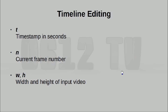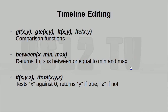The things you can use in a similar way include T, which is a timestamp in seconds; N, which is the actual frame number; as well as W and H, which are the width and height of the video. If you need to perform comparisons, you have access to functions like greater than, greater than or equal, less than, or less than or equal. These functions give you 1 if the comparison is true and 0 if not. Same deal for 'between' — if x is between the minimum and maximum value, you get 1, otherwise 0. If you want to do more complex comparisons, you can use 'if' and 'ifnot'. Basically a test is run against x. In the case of 'if', we want to make sure x is not 0. In the case of 'ifnot', the evaluation only becomes true if x is 0. If the result is true, y will be returned; otherwise z will be returned.